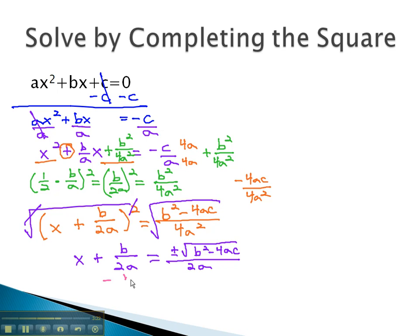To get the x alone, we simply subtract b over 2a from both sides. When we do, because there's already a common denominator, we can write them all over the single denominator. We get the opposite of b, plus or minus the square root of b squared, minus 4ac, all over 2a.